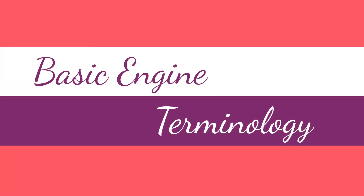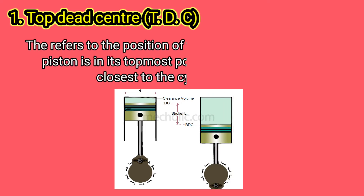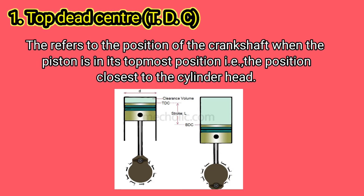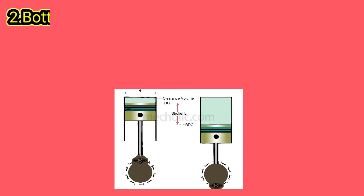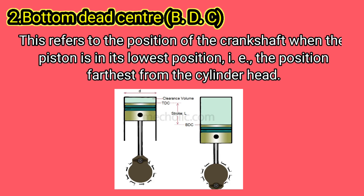Basic engine terminology. Top Dead Center (TDC) refers to the position of the crankshaft when the piston is in its topmost position — that is, the position closest to the cylinder head. Bottom Dead Center (BDC) refers to the position of the crankshaft when the piston is in its lowest position — that is, the position farthest from the cylinder head.